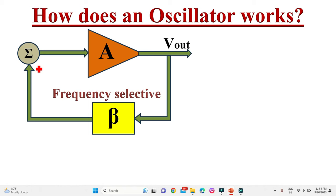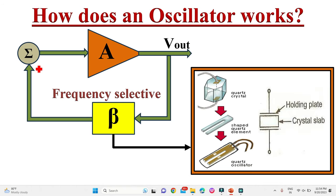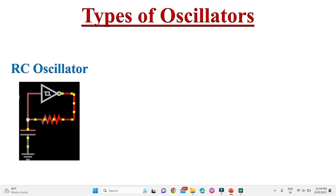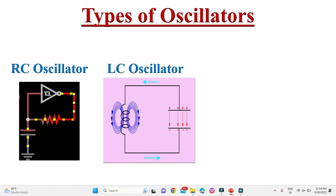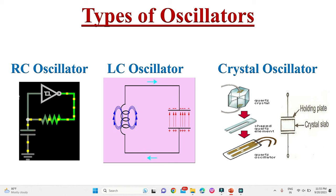The feedback circuits used in oscillators are frequency selective circuits, which can be made up of RL, RC, or RLC components. Even quartz crystals can be used for frequency selection in the feedback circuit. Depending on the type of feedback circuit used, oscillators can be classified as RC oscillators, LC oscillators, or crystal oscillators.